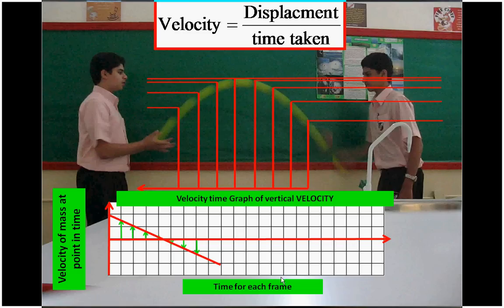And it was acceleration due to gravity, as you would expect. And if you were to get the gradient of this graph, you should find the change in velocity with time should be 9.81 meters per second per second.